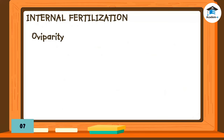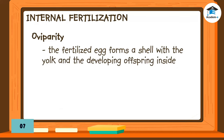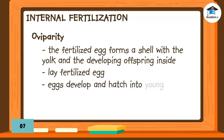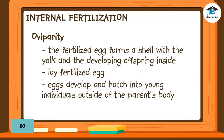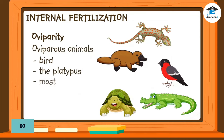In oviparity, the fertilized egg forms a hard shell and yolk inside, together with the developing offspring. Oviparous animals lay fertilized eggs, which develop and hatch into young individuals outside of the parent's body. Oviparous animals include birds, the platypus, and most reptiles and fish.